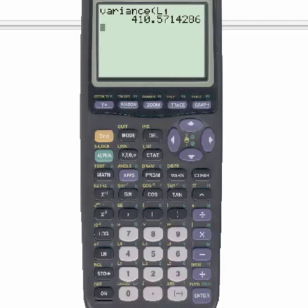And here we have the variance. They've asked us to round this to the nearest hundredth place. The hundredth place is going to be the second decimal place. And to round to the second decimal place, we're going to go to the third decimal place. Since that number is a 1, which is less than 5, our answer will be 410.57.